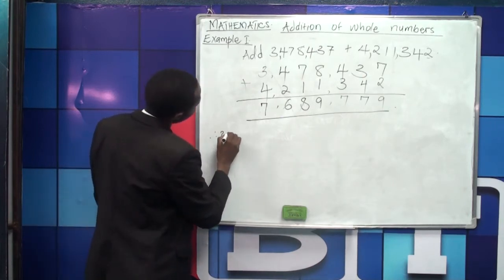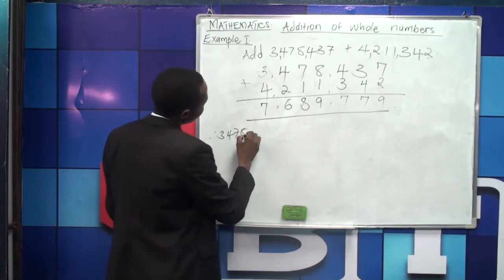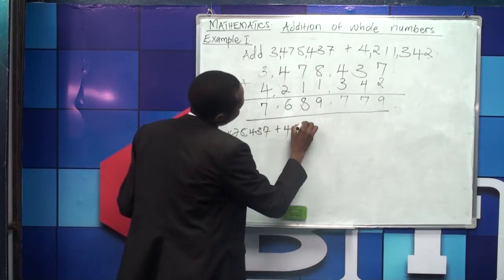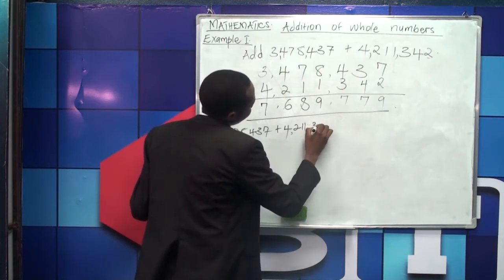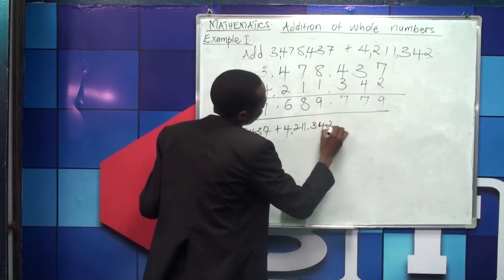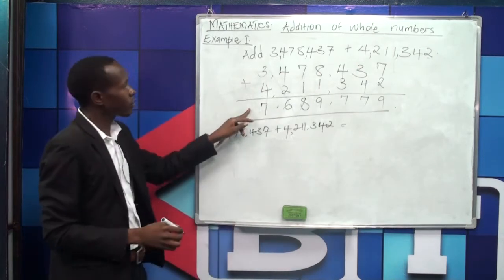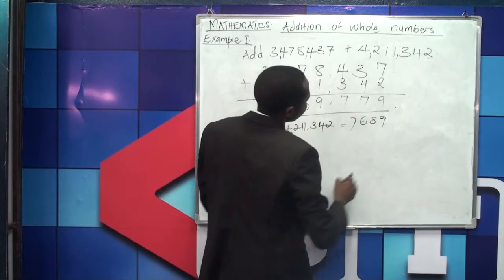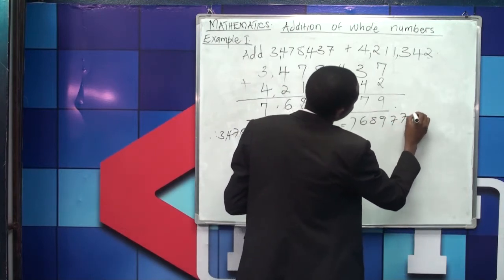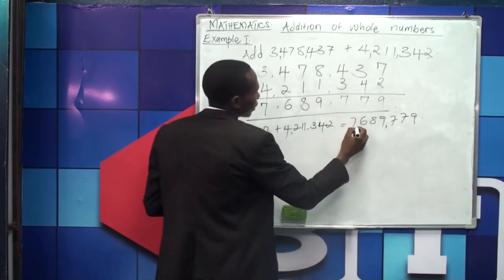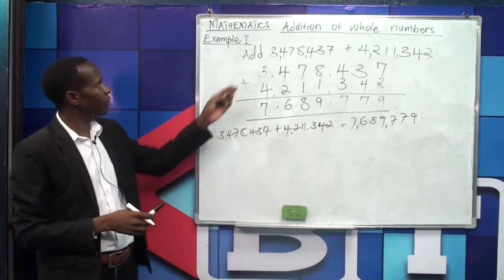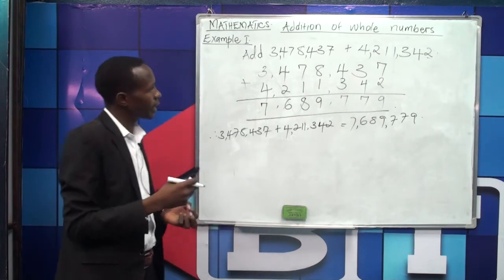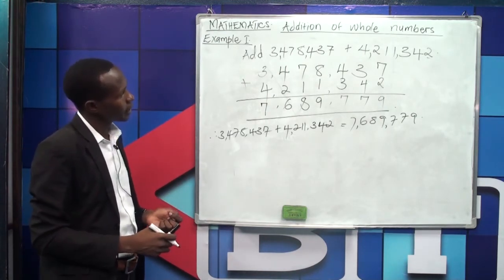Therefore, 3,478,437 plus 4,211,342 gives us 7,689,779. That is our answer.